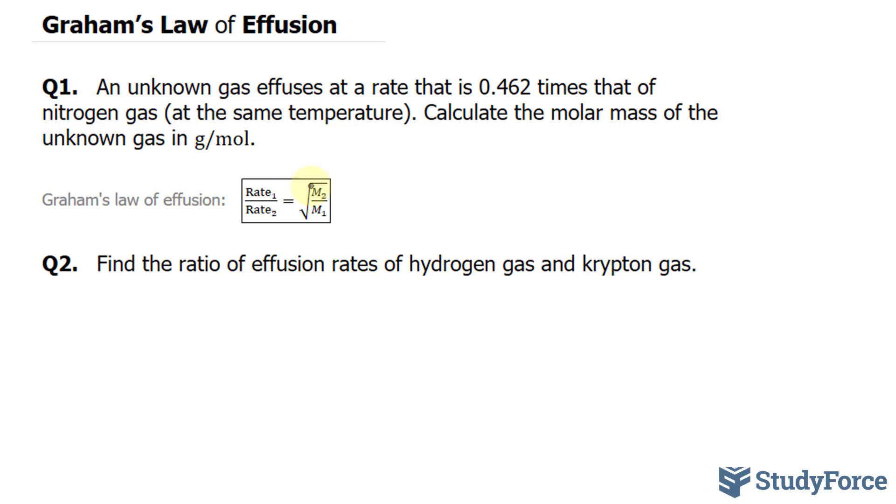We're told that the unknown gas effuses at a rate of 0.462. That's a ratio, so 0.462 to 1. Therefore, the rate of our unknown can be represented as 0.462 and the rate of nitrogen can be represented as 1.